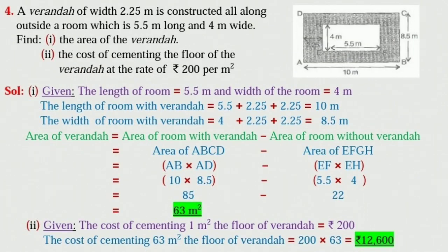Sum No. 4. A veranda of width 2.25 meter is constructed all along outside a room which is 5.5 meter long and 4 meter wide. Find, first, the area of the veranda.